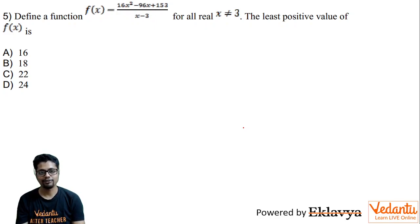Define a function f of x equal to 16x square minus 96x plus 153 divided by x minus 3. For all real x not equal to 3, that means x can be any real value except 3.